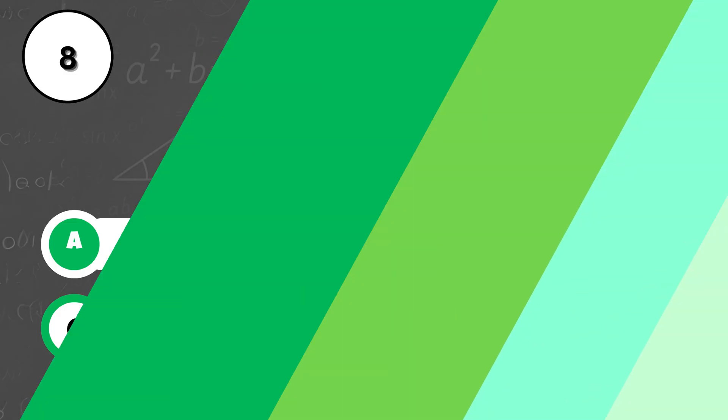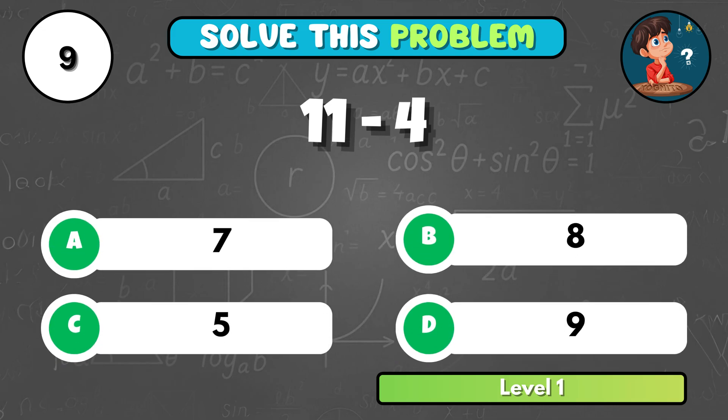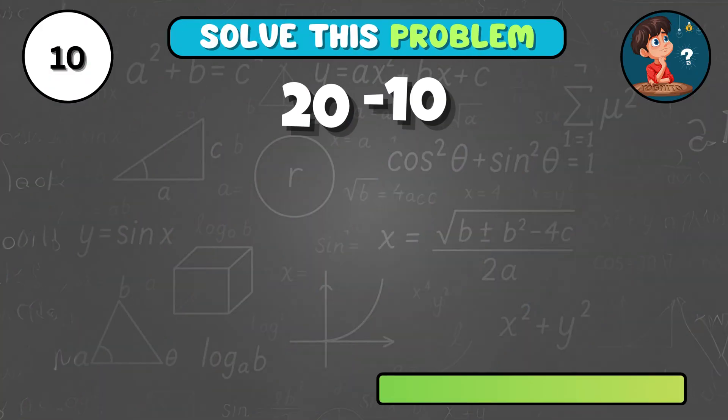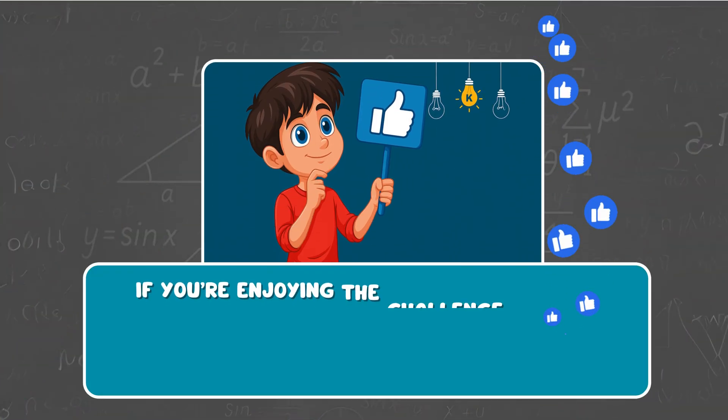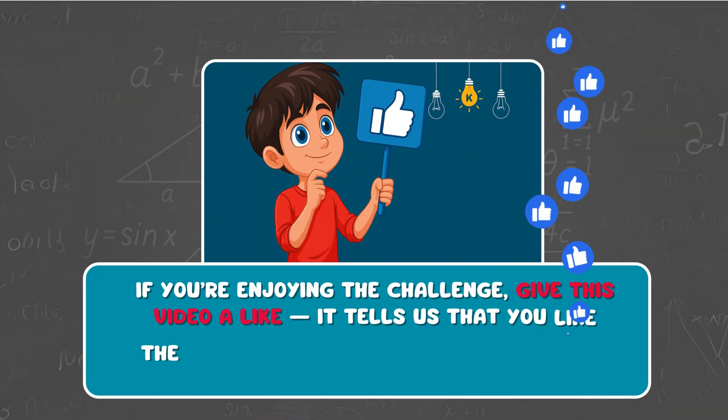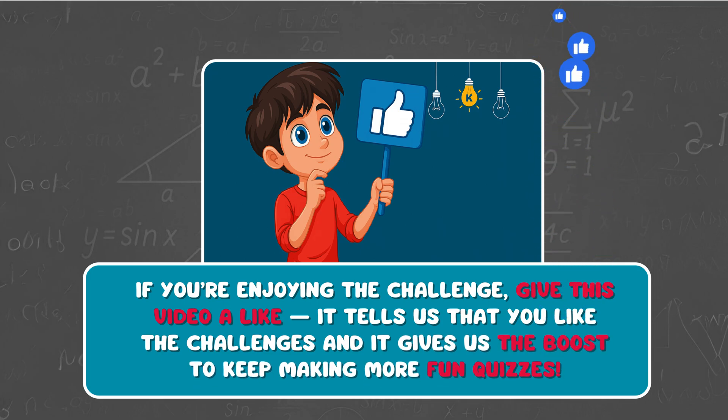Try this! 11 minus 4 is... It equals A, 7! What's 20 minus 10? That's B, 10! Don't forget to like this video! It shows us you love this content and motivates us to make even more fun quizzes for you!